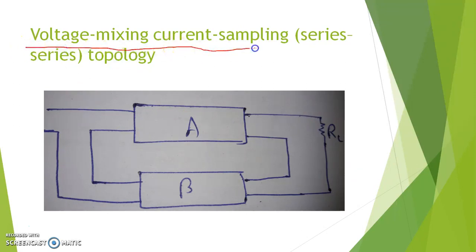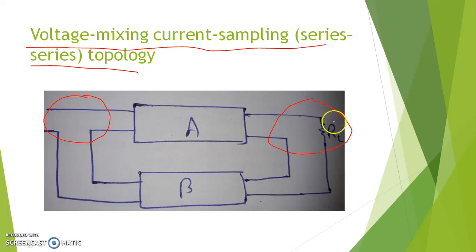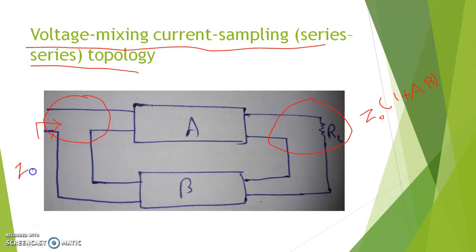This is the voltage mixing current sampling, or series-series feedback topology. The mixing network is series and the sampling network is also series. In series, the impedance increases. So the new output impedance will be Z_out × (1 + Aβ), and the new input impedance is ZI × (1 + Aβ). In series connection, both input and output impedance increase, and the increasing factor is 1 + Aβ.